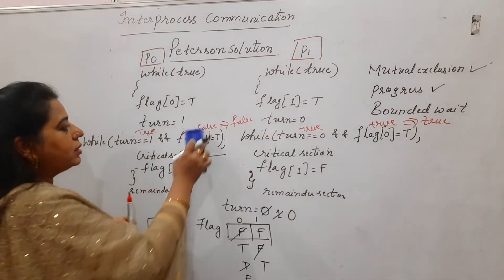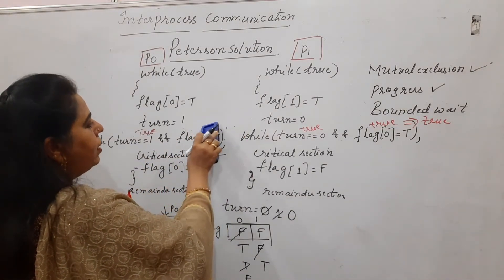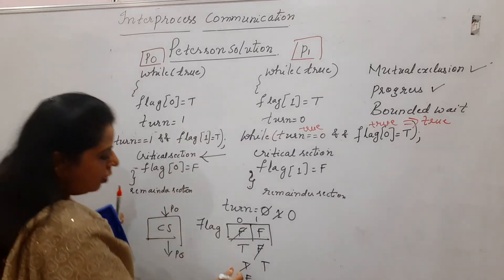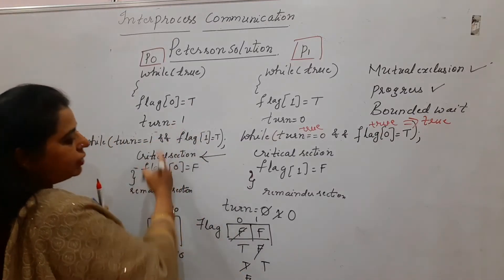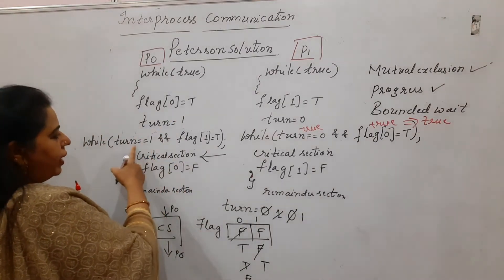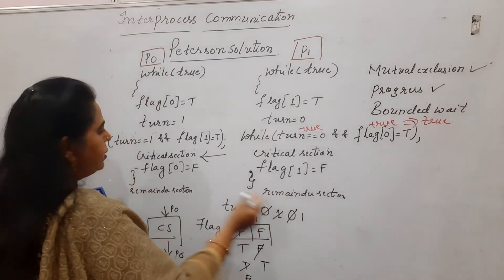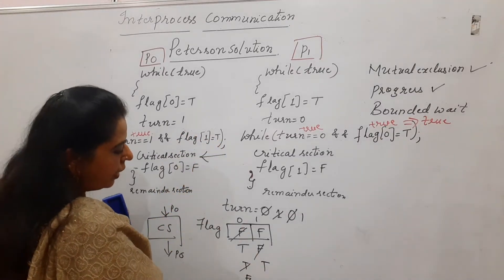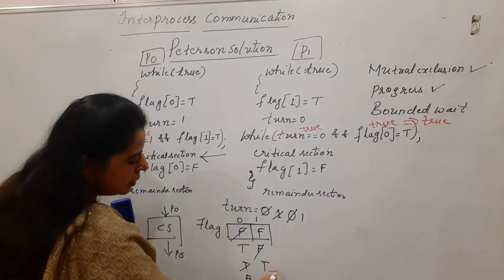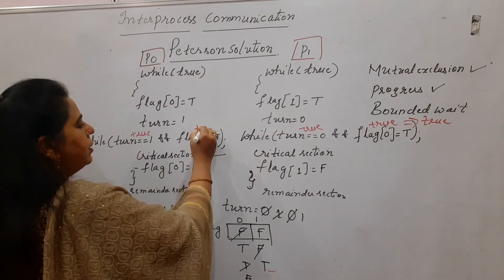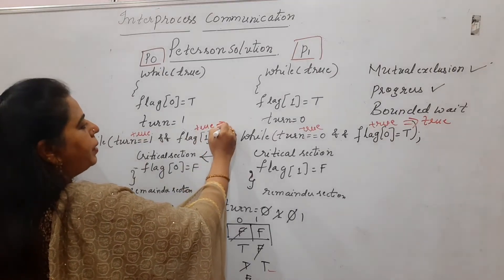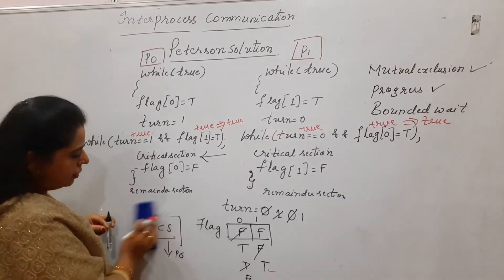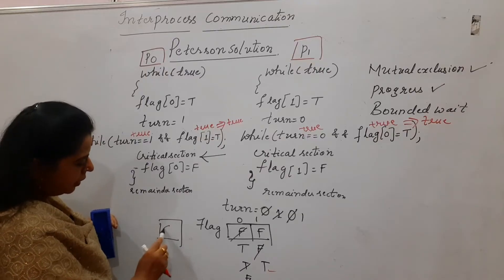P0 has come out but wants to enter the critical section again. P0 sets its flag back to T and changes turn to one. The while loop check: turn equals one — true; flag of P1 is T — true. True AND true is true, so P0 cannot enter the critical section this time. P0 is blocked.